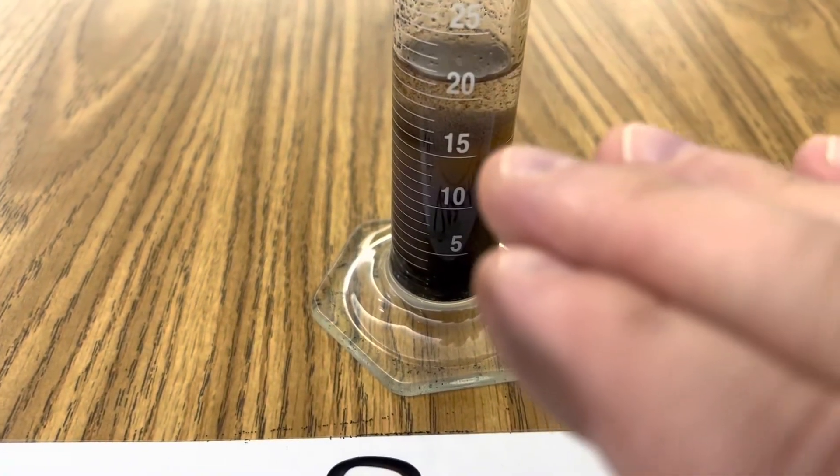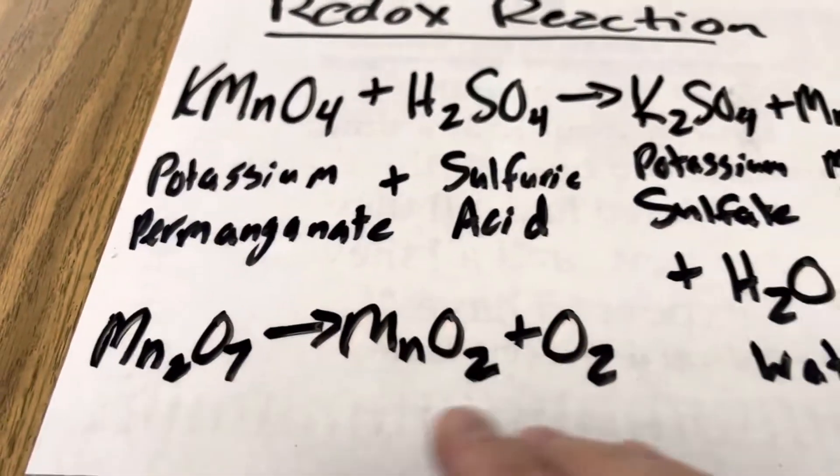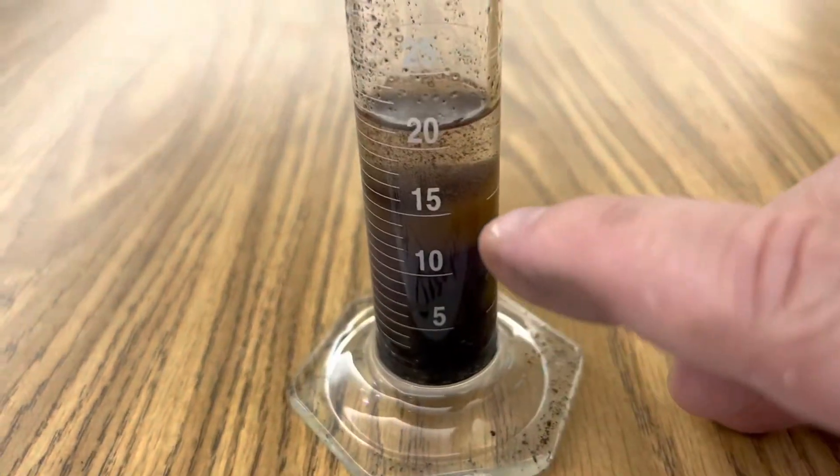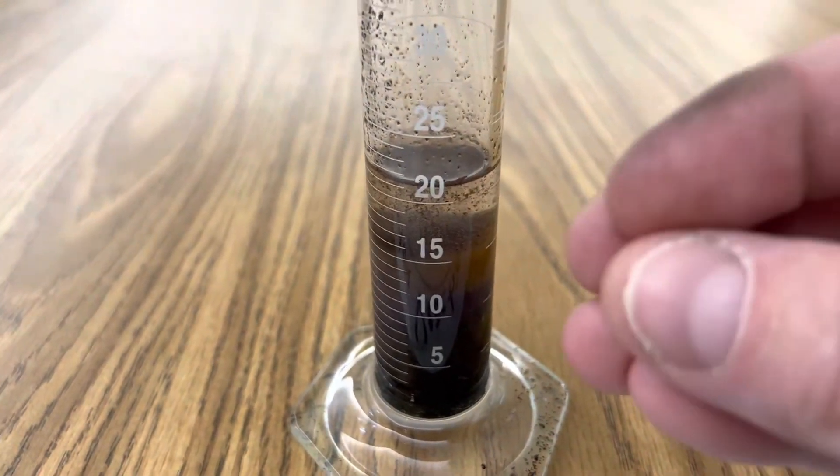And then that manganese heptoxide is reduced into manganese dioxide and oxygen, and that creates a lot of heat. And that oxygen and heat is rising up into this layer of isopropyl alcohol, which is very flammable.